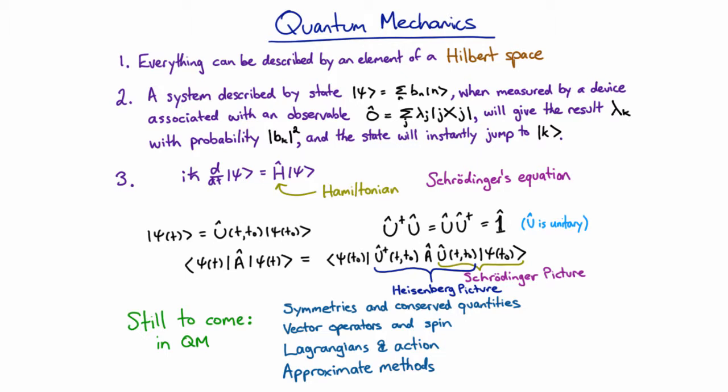All observables, which are operators associated with particular measurements, are Hermitian because they have real eigenvalues. The eigenvalues are the measurement results, which is why they have to be real.